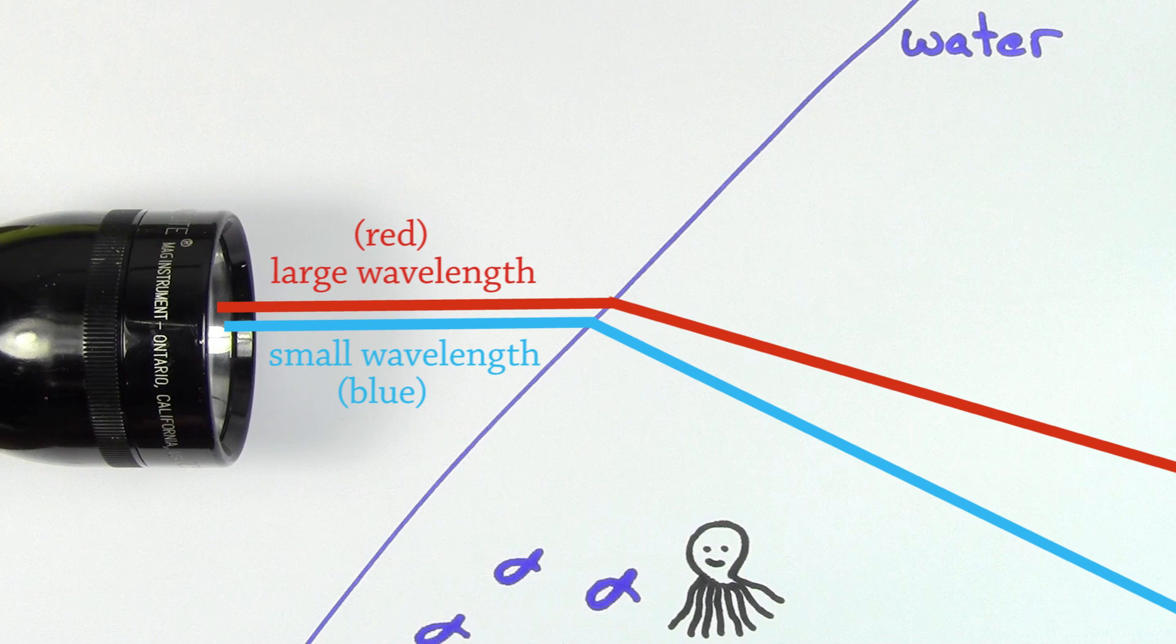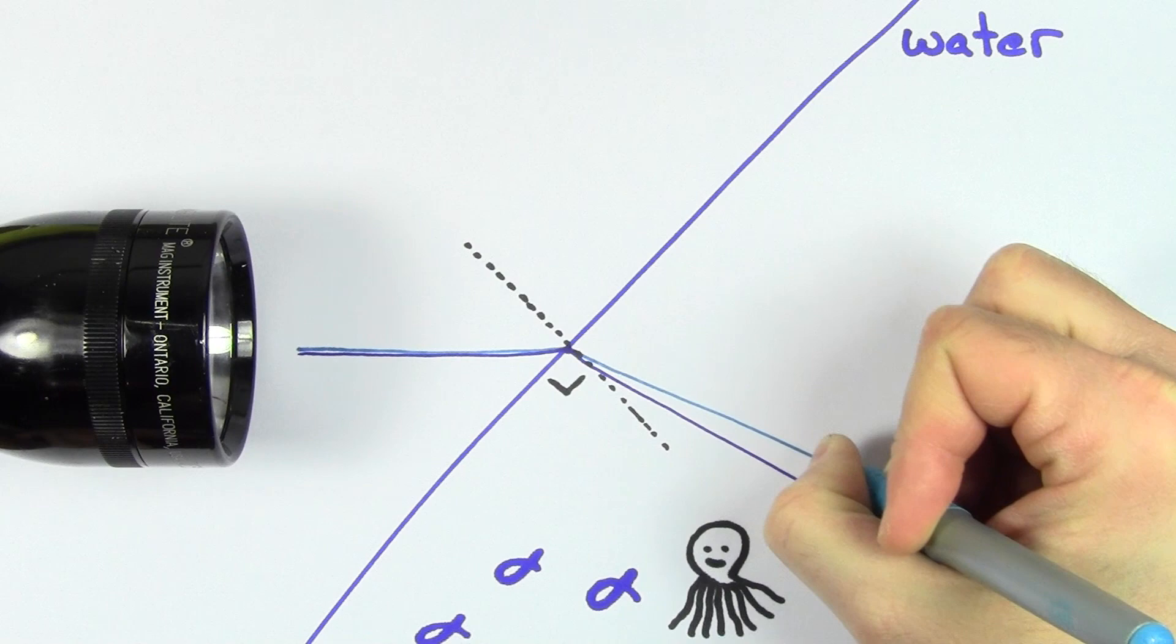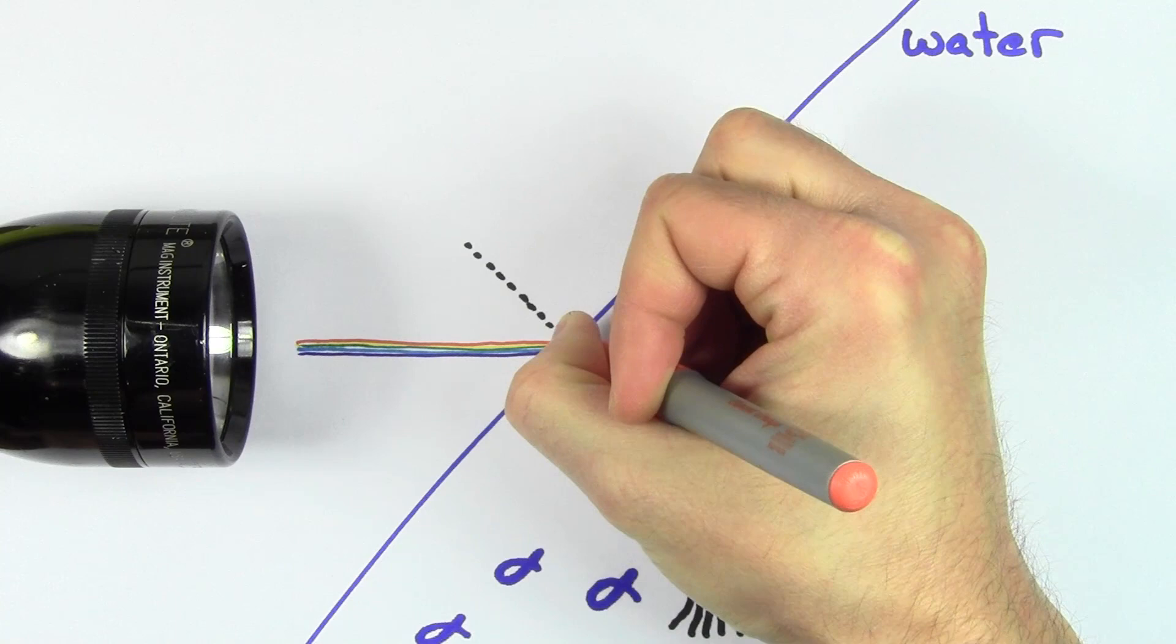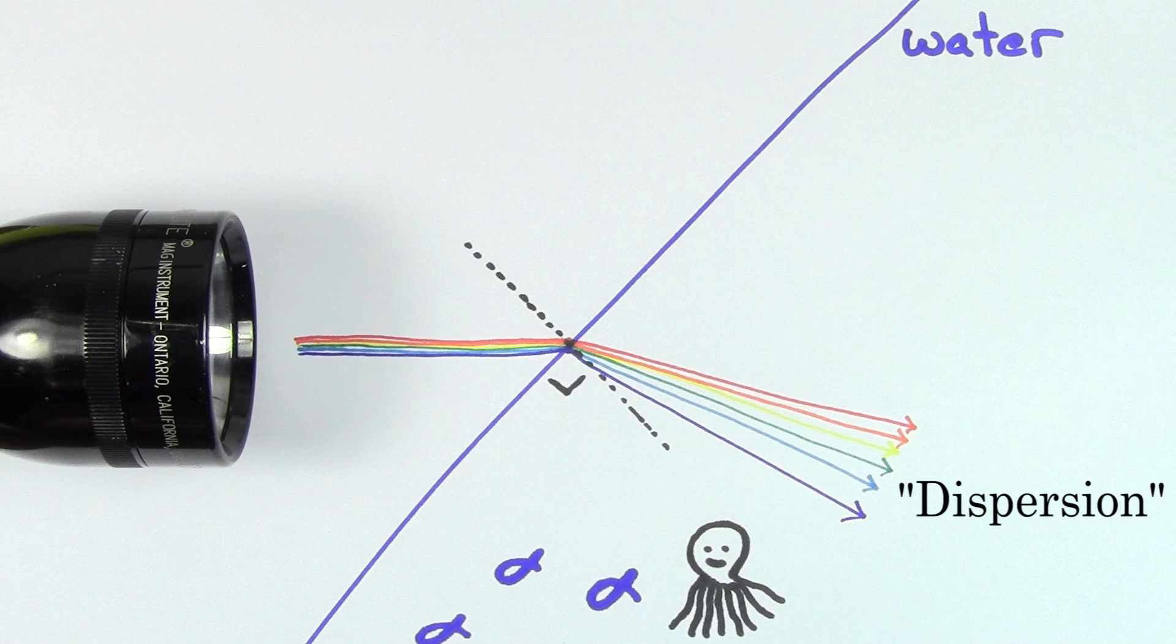This is why in water, violet light would bend the most since it has the smallest wavelength for visible light. Blue light would bend slightly less, green light a little less, yellow light a little less than that, orange light even less, and red light would bend the least.